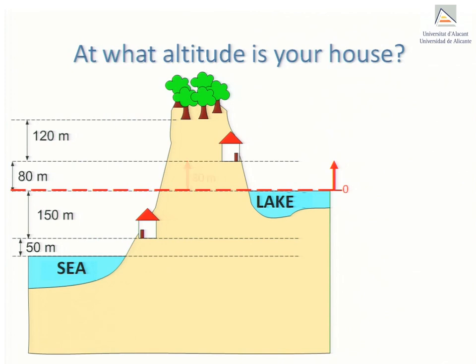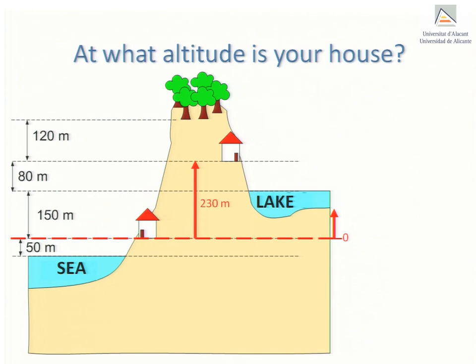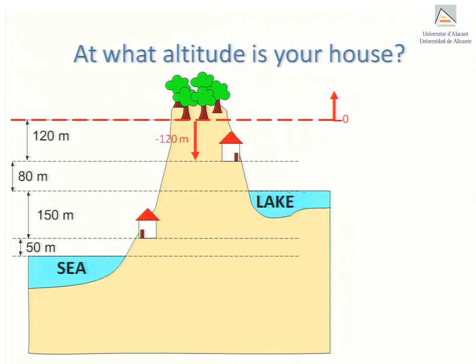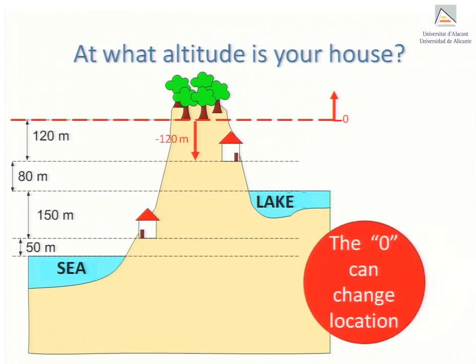Your house is 230 metres above Jamie's — now Jamie's house serves as the zero point of altitude. Your house is 280 metres above sea level, where the surface of the sea represents zero altitude. Your house is 120 metres below forest level, where the edge of the forest right up top of the mountain represents zero altitude. All these definitions of the altitude of your house are correct. They only differ from each other because the reference altitude has been changed in each case — the zero position on the altitude scale has been shifted.